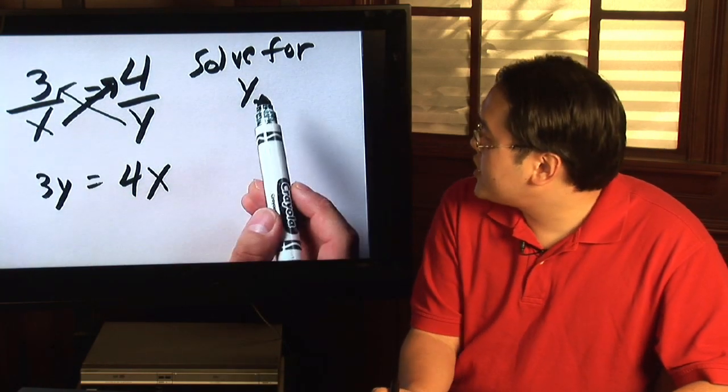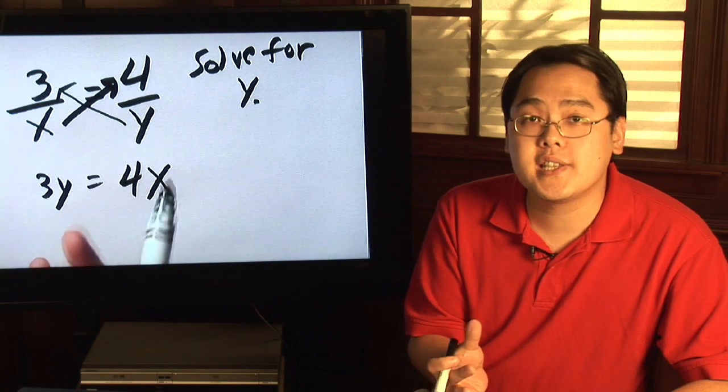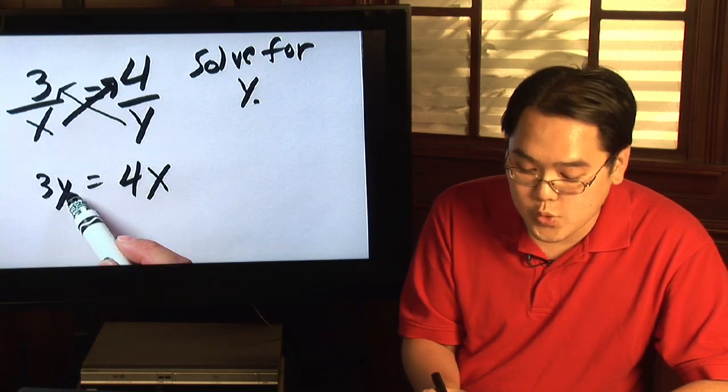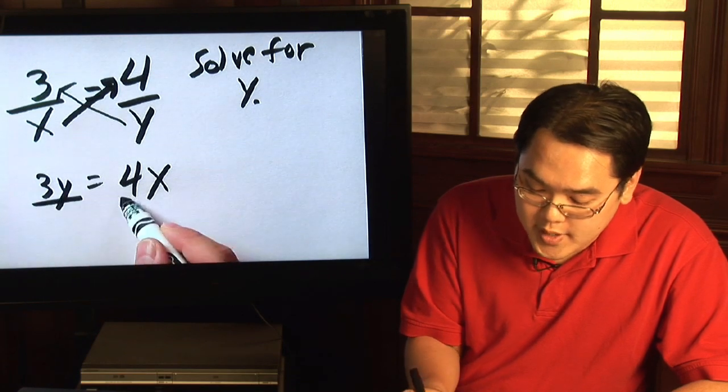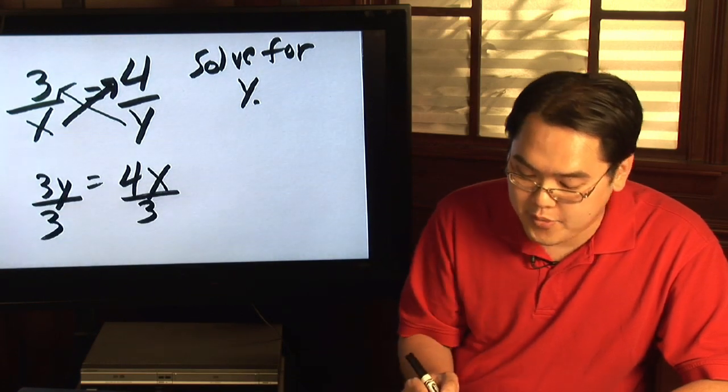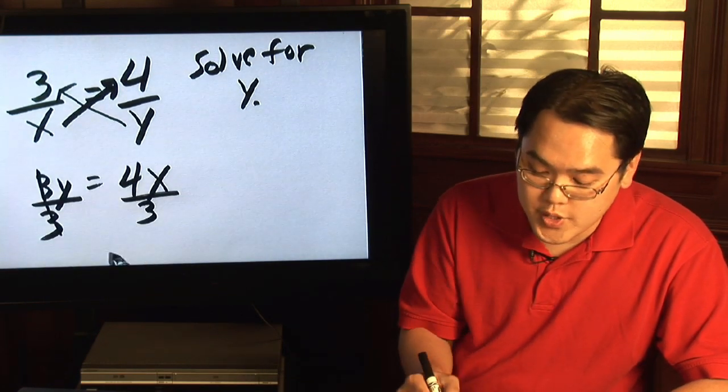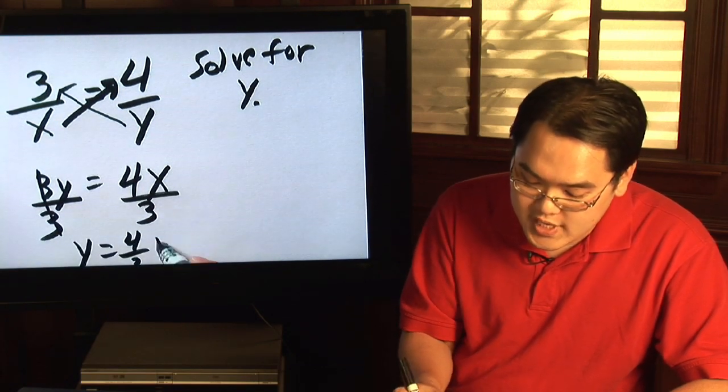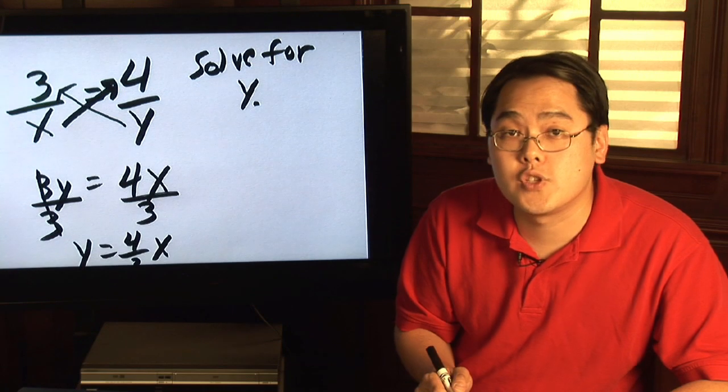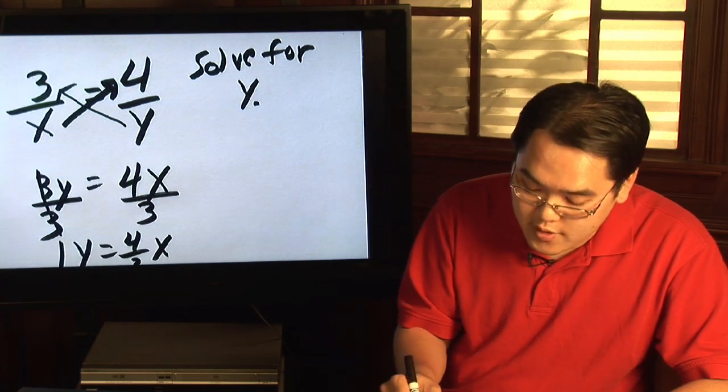Now, since your objective is to solve for y, you want to isolate the y term. Because the y is being multiplied with a 3, you want to get rid of that, so you divide both sides by 3. As a result, the 3's will cancel, and you have y equals 4 thirds x. And then, since you solved for y, you are finished.